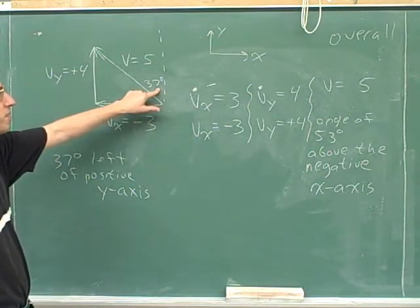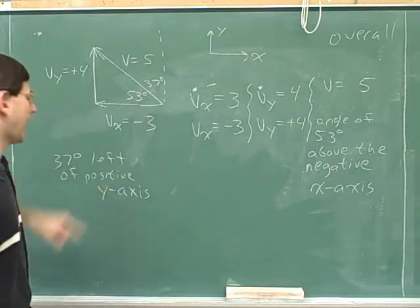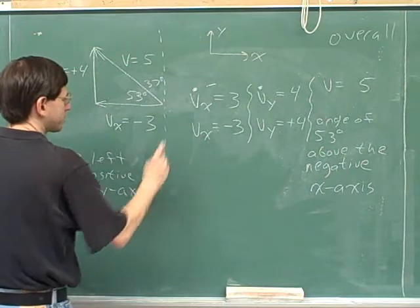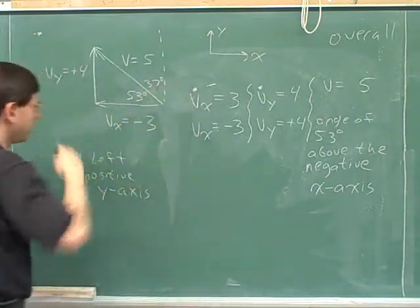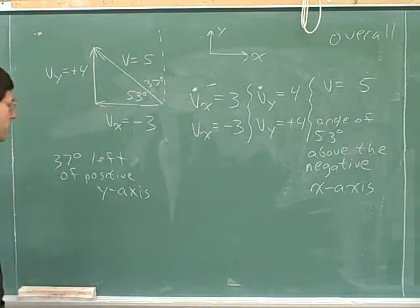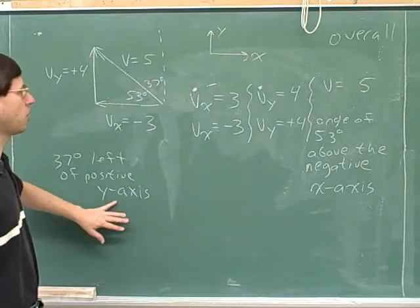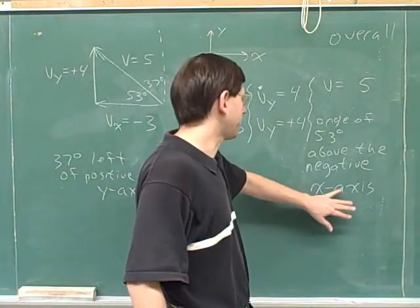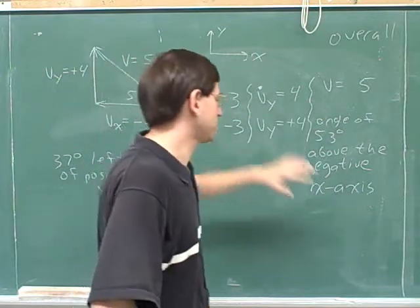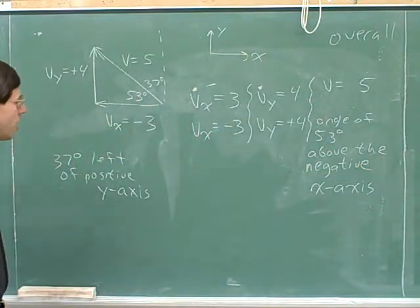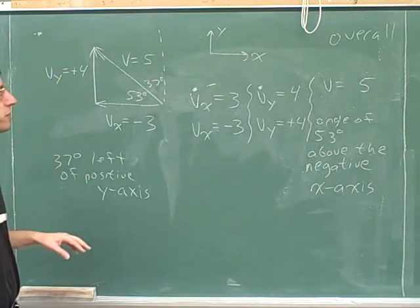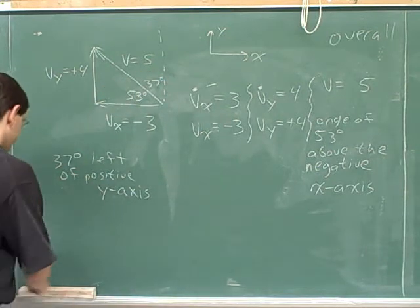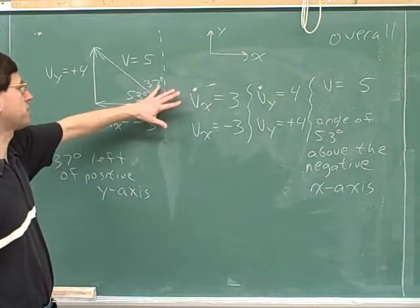This 37 degrees is not bounded by the x-axis — it's bounded by the positive y-axis, not the negative y-axis. And we're clearly to the left, not the right, of that positive y-axis. Note that it wouldn't make sense to say you were above or below the y-axis; you can only be left or right of the y-axis. Similarly, you can't be right or left of the x-axis — you can only be above or below it. If you're not comfortable describing the angle in words, you can simply draw a picture and clearly label the angle you're referring to.